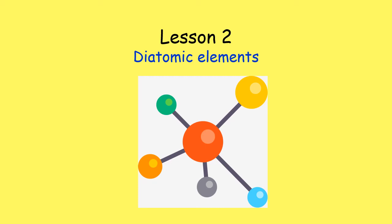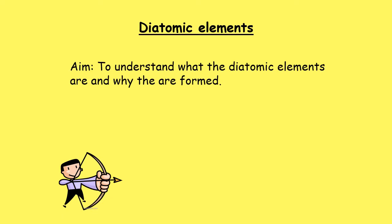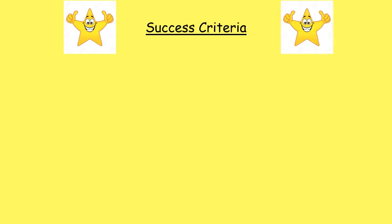This is a National Four/National Five chemistry lesson on the topic of bonding. Today's lesson is about diatomic elements. The aim is to understand what the diatomic elements are and why they are formed.